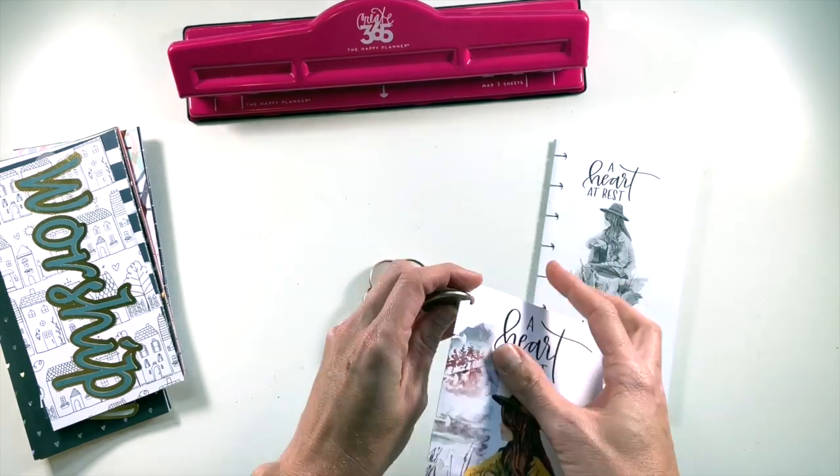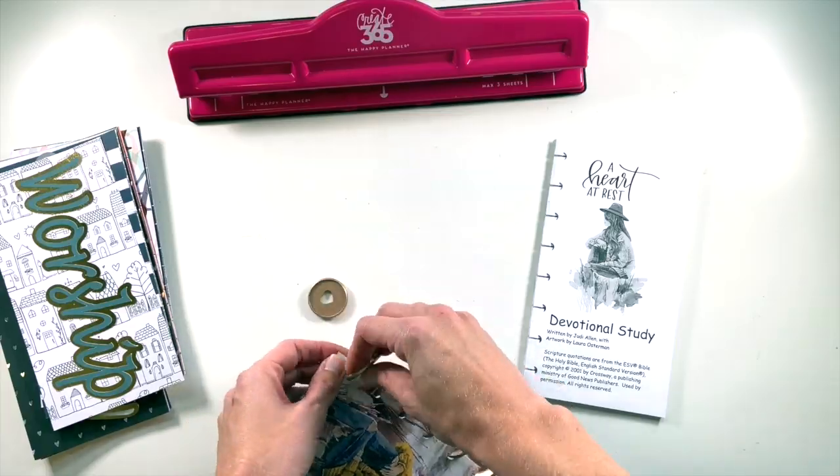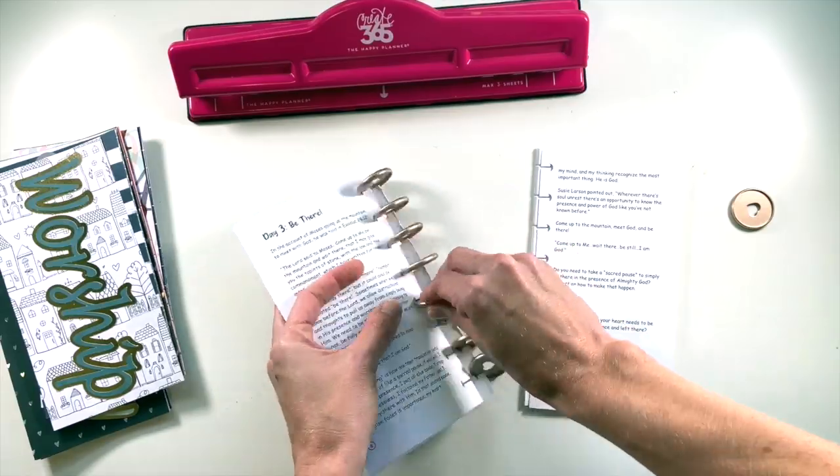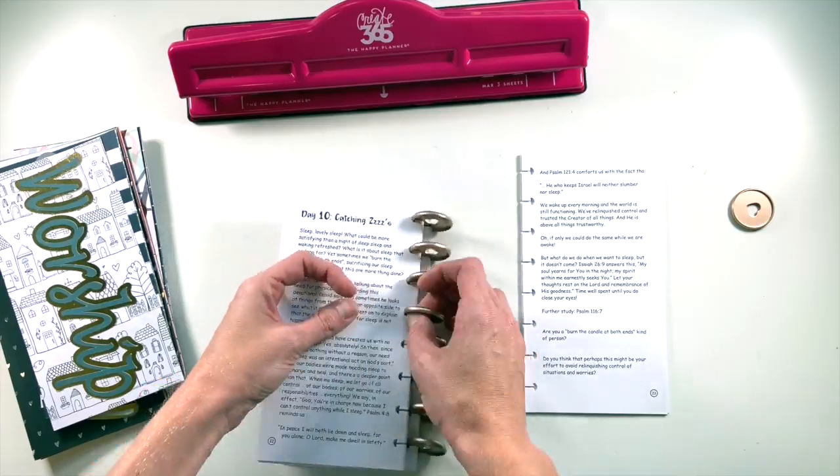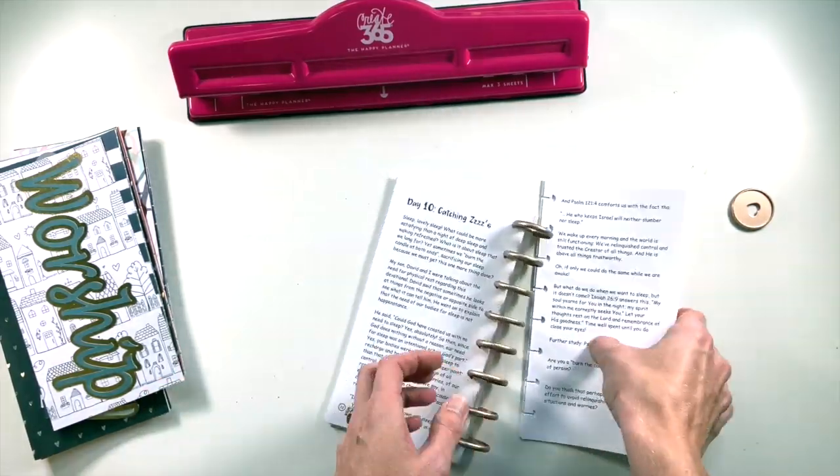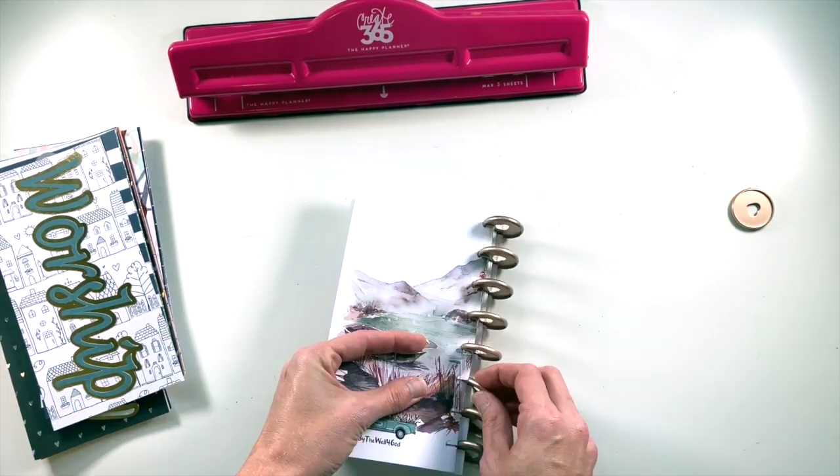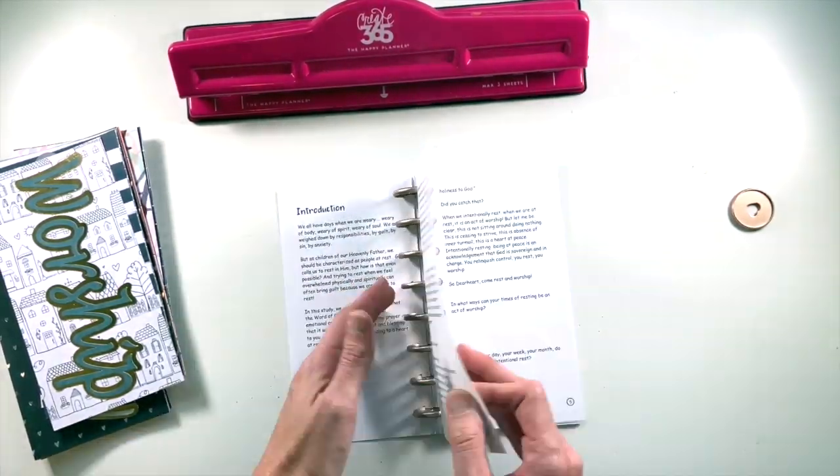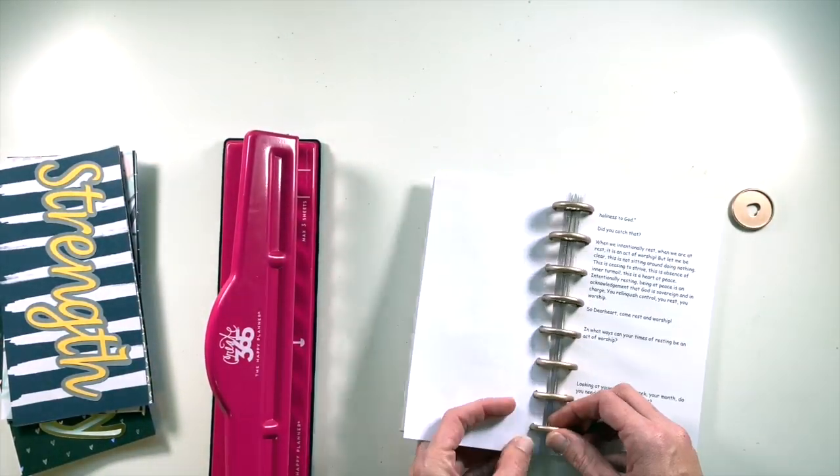So this hole punch is designed specifically for these discs, and they all go with the Create 365 system, the happy planner system. You can see here I'm just assembling. I end up with one extra disc which I'm going to just add to my stash to use perhaps in a later project. I'm making sure again that I get my devotional put in in the right order. But the great thing about these discs is that you can take it apart and put it back together, so if for some reason I had something out of order, I could just take that page out and put it back in, as opposed to if you were to spiral bind, then that would be more permanent.